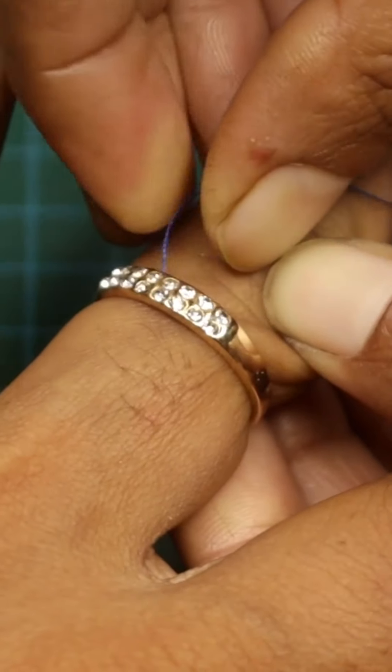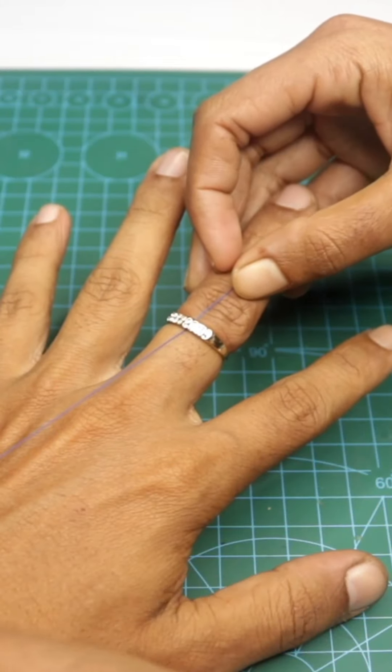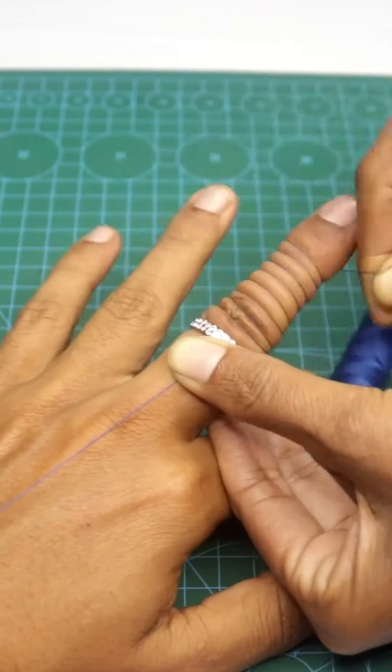First, pass the thread under the ring and make a few turns around the finger, as shown here. Then fix it with tape.